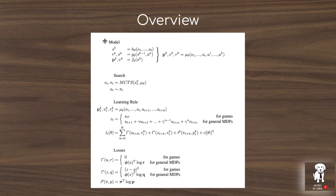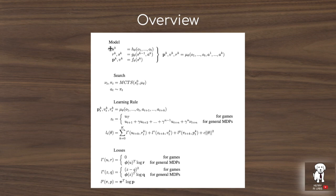This diagram of the MuZero equations gives a great overview of how the algorithm works. You start with S0, the result of the mapping function H applied to the previous stack of observations. In Atari, you stack the last 32 96×96 RGB frames along the feature axis, and H maps this into a low-dimensional representation to start the tree-based planning search. The dynamics function then maps hidden states and an action into a reward and a next state, predicting the intermediate reward as well as the transition to the next state during tree search.